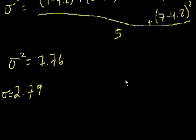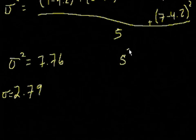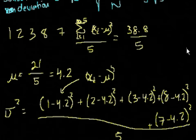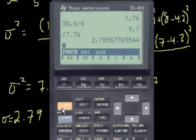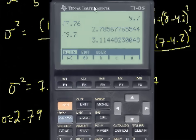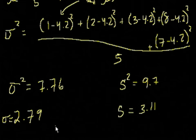If those numbers were a sample and not the population, the sample variance was 9.7, so the sample standard deviation is the square root of that, which equals 3.11. Hopefully that makes it more concrete — we've been dealing with sigma notation and variables, but when you do it with actual numbers, you can see it's not that difficult. See you in the next video.